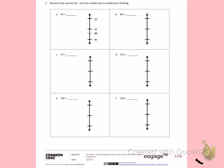This is Lesson 13 Homework, page 1. Today's objective was to round 2 and 3 digit numbers to the nearest 10 on the vertical number line. Number 1. Round to the nearest 10. Use the number line to model your thinking.